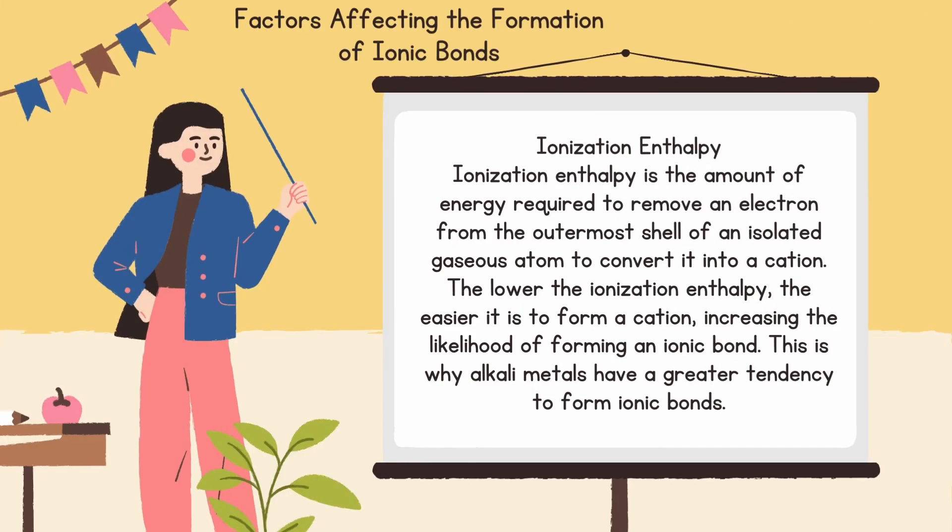Next is factors affecting the formation of ionic bonds. First is ionization enthalpy. Ionization enthalpy is the amount of energy required to remove an electron from the outermost shell of an isolated gaseous atom to convert it into a cation. The lower the ionization enthalpy, the easier it is to form a cation increasing the likelihood of forming an ionic bond. This is why alkali metals have a greater tendency to form ionic bonds.